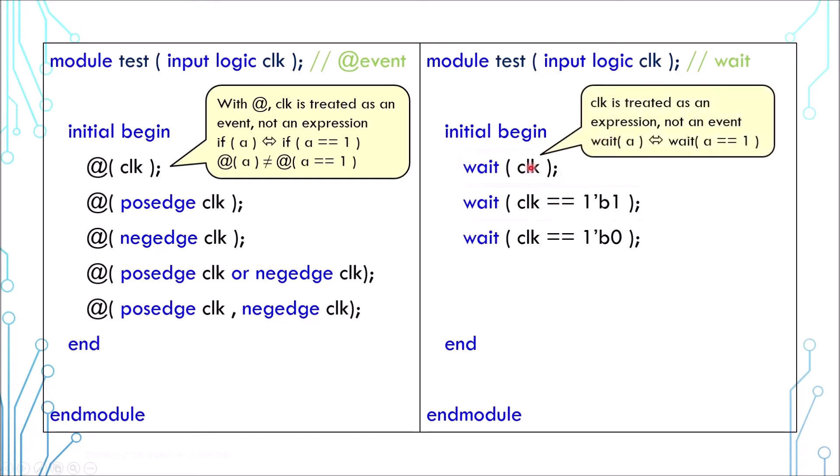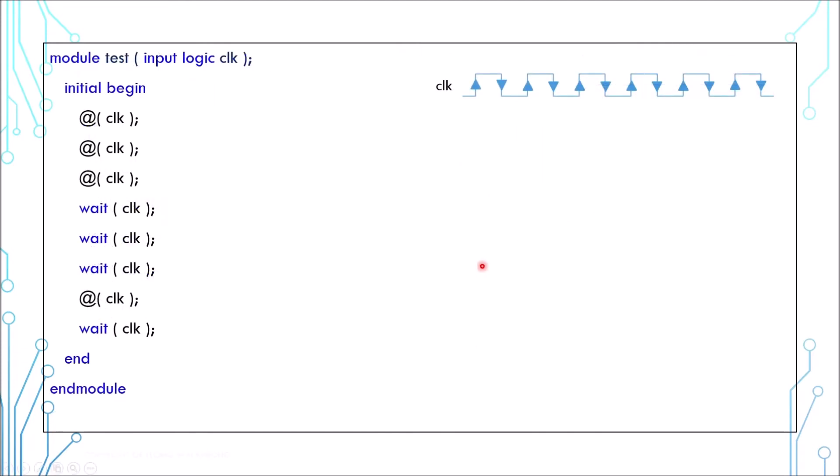Here are some examples of using wait. The thing to note is that clock here is an expression. Wait(clk) is the same as wait(clk == 1). We can look at this example to understand further.